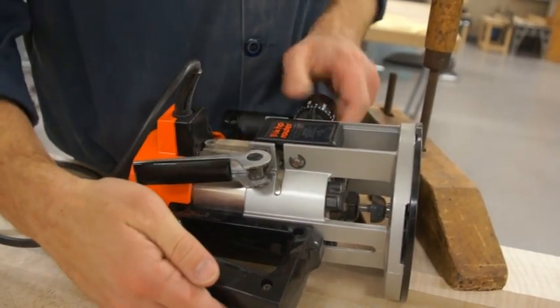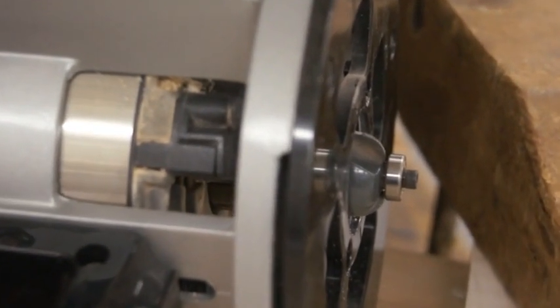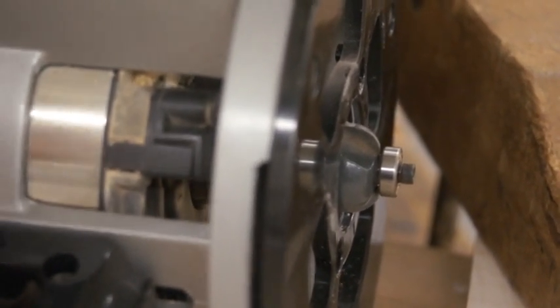The proper way to adjust the depth of cut is not to change how far you mount the bit into the chuck, but to adjust the base using the depth of cut adjustment.